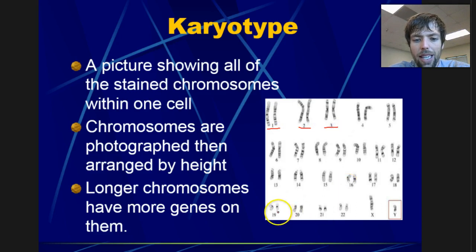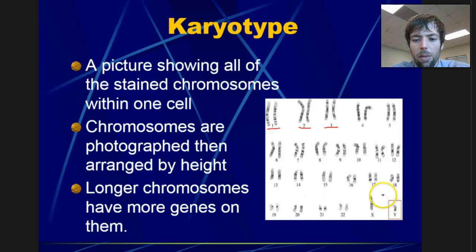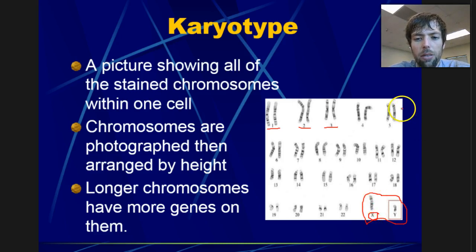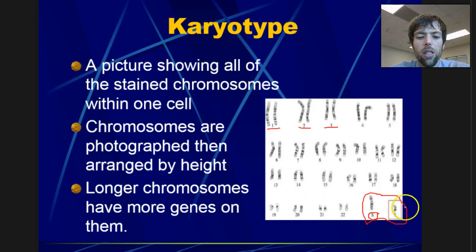These chromosomes near the bottom tend to have less DNA. The reason I say 'tend to' is because our last pair is a really special pair known as the sex chromosomes. The X sex chromosome is really, really long — you would think it goes up at the top — but because it's a sex chromosome, we put it down at the bottom.